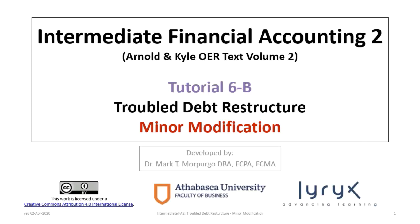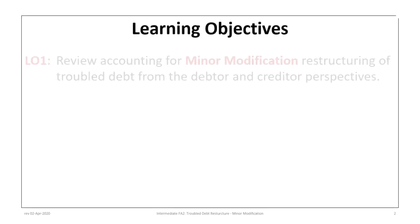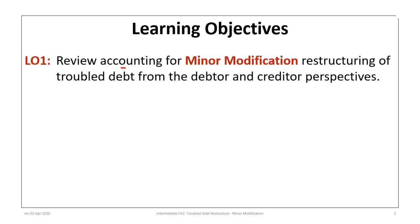Hello and welcome to Intermediate Financial Accounting 2, Tutorial 6B. This is the second of a series of three tutorials focused on accounting for troubled debt restructuring. This tutorial will focus on restructuring of troubled debt with minor modification, and has five learning objectives. The first is to review accounting for minor modification of restructuring of troubled debt from both the debtor and creditor perspectives.